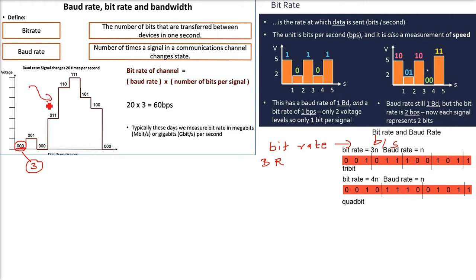I am saying that the signal changes say 20 times per second here. So the 20 is the baud rate. Signal is changing 20 times per second. That is the baud rate. And the number of bits per signal is 3. So how do we get the bitrate? The bitrate will be the number of times the signal changes, that is the 20 multiplied by the number of bits per signal, which is 3 here. In this example, 60 will be the bitrate, that is the bit per second for the baud rate of 20.